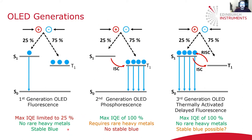This is obviously not desirable, and so second generation OLEDs were made which incorporated heavy metals to promote intersystem crossing and triplet transitions. These second generation OLEDs work through phosphorescence from the triplet state, but the downside is that there's no stable blue emitter and they require the use of rare heavy metals to facilitate these transitions.